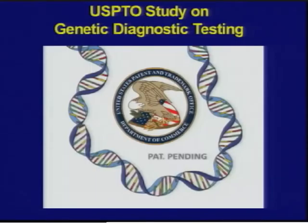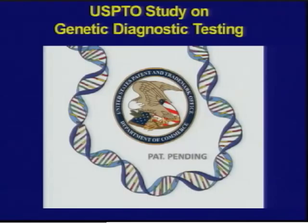Moving to the policy arena: Congress passed the Leahy-Smith America Invents Act, reforming U.S. patent law to align with other countries. Buried within this act is a requirement for the U.S. Patent and Trademark Office to study genetic testing — specifically to prepare a report for Congress on 'effective ways to provide independent, confirming genetic diagnostic test activity where gene patents and exclusive licensing for primary genetic diagnostic tests exist.' The study examines whether gene patents and exclusive licenses prevent patient access to genetic testing. The PTO report is due to Congress by June 16th; public meetings are in February and March, and written comments are due by March 26th.